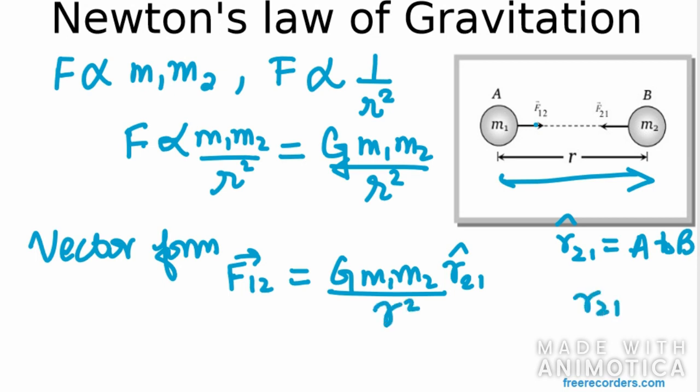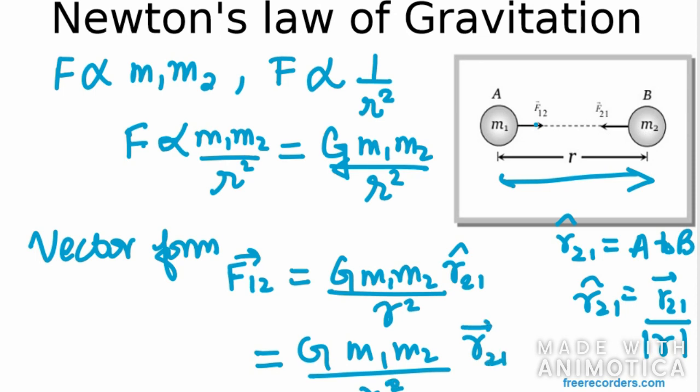Now r̂21, a unit vector can be defined as r21 vector over r magnitude. So I will replace r̂21 unit vector with this. So it will be G·m1·m2/r², and r21 vector. This will be r³ now.